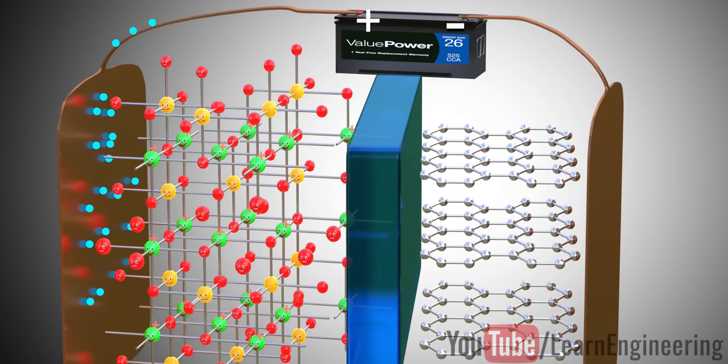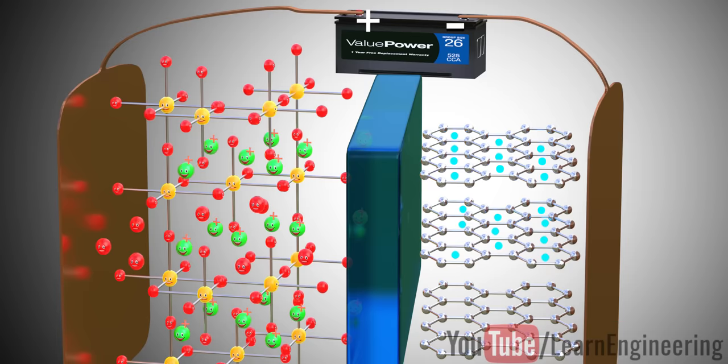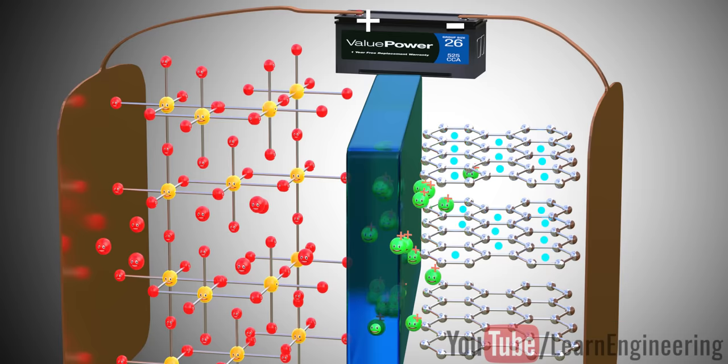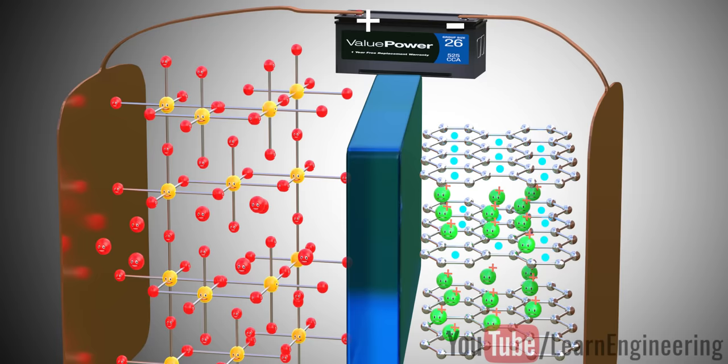In the meantime, the positively charged lithium-ions will be attracted towards the negative terminal and will flow through the electrolyte. Lithium-ions also reach the graphite layer space and get trapped there. Once all the lithium atoms reach the graphite sheet, the cell is fully charged.